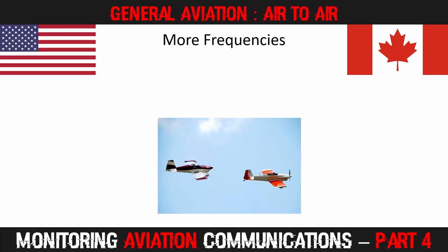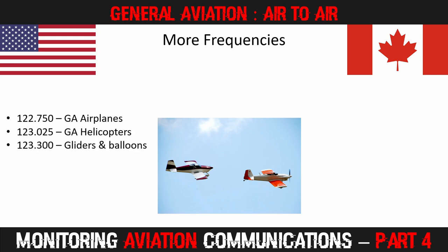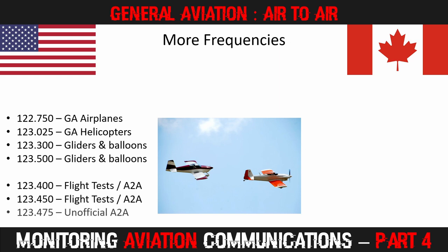In the US, there are a number of frequencies that have been assigned for air-to-air communications between aircraft, gliders, and hot air balloons — it's useful to have these programmed in. Quite often you will also hear air-to-air conversations on 123.4, 123.45, and 123.475. In the States, the first two of these are designated for flight testing; however, they are all used quite a lot for unofficial air-to-air communications. In Canada, just one frequency has been allocated for glider use, and that is 123.4. Also, the 123.45 unofficial air-to-air frequency can often be quite active.